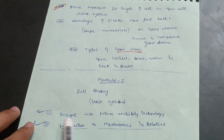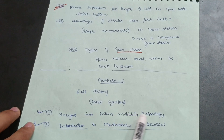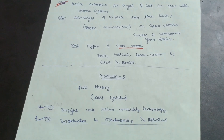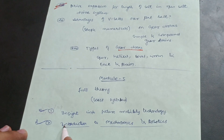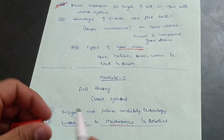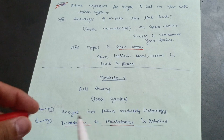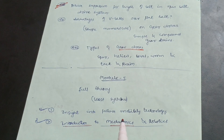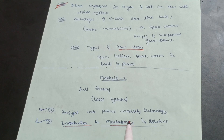Module 5 has the least syllabus. Go through two chapters: insight into future mobility technology, and introduction to mechatronics and robotics. I recommend focusing on introduction to mechatronics and robotics as it contains the least syllabus. I hope this content will definitely help you in passing the VTU examination for Elements of Mechanical Engineering.